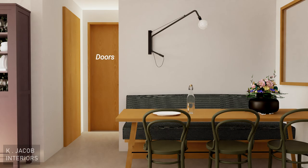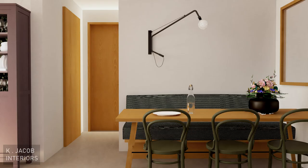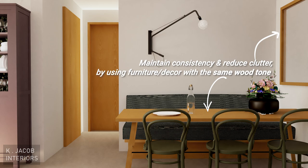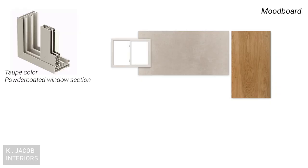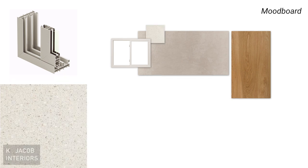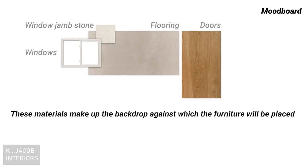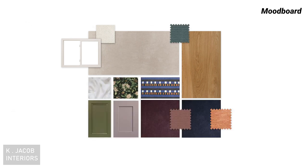Next up is doors. We decided to use oak veneer with a nice open grain polish on it, which added a lot of textural value to the space and kept the feeling light and airy. We decided to go for taupe powder coated window frames and chose the jamb stone around the windows in a light tone as well. These things make up the backdrop against which the furniture will be placed. Once you have selected these foundational materials, you can then move on to selecting materials that will complement and enhance them.